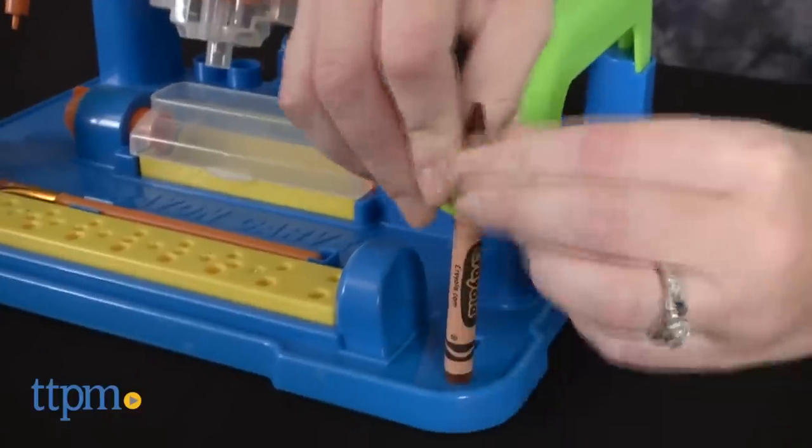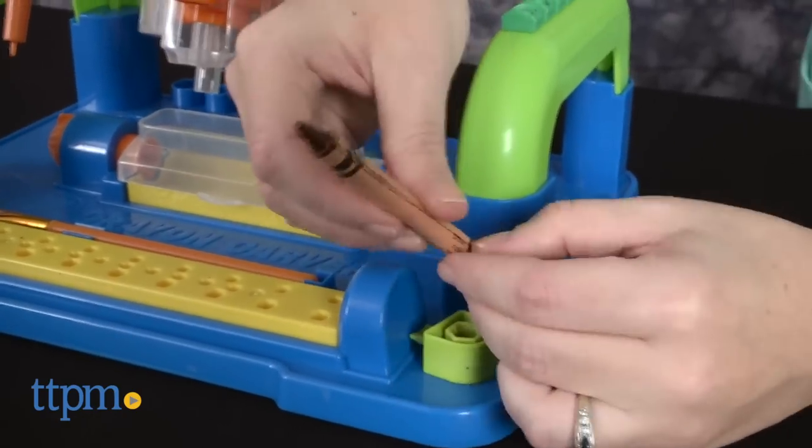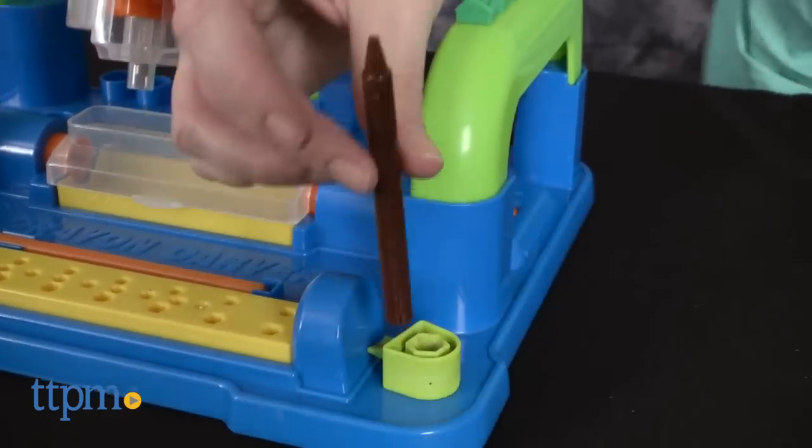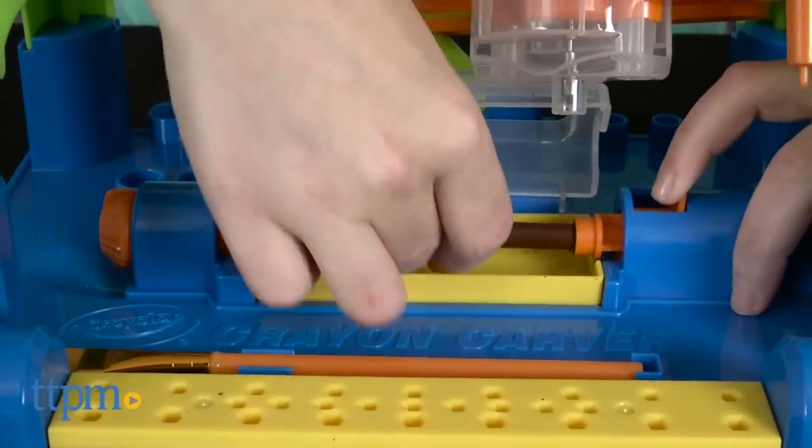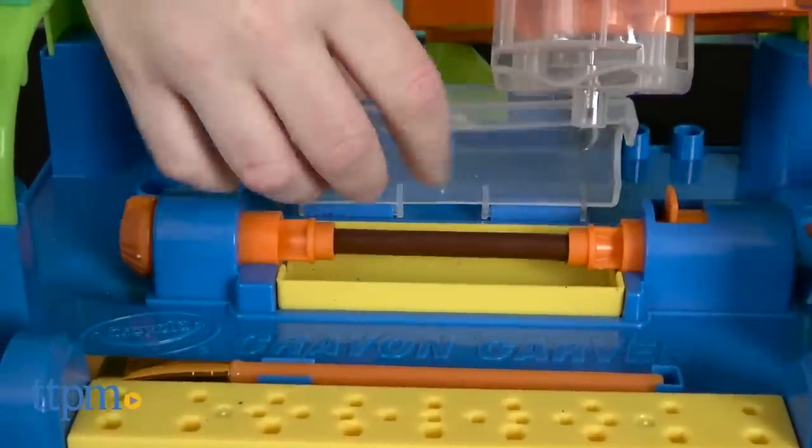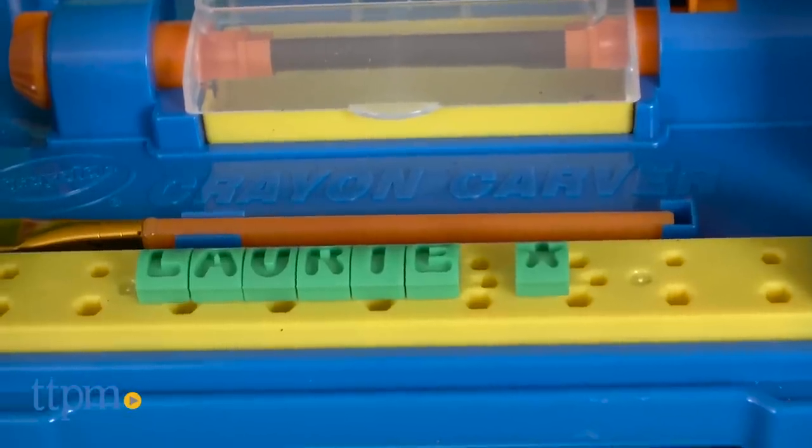Use the wrapper rubber to peel off a crayon's label and insert the crayon into the Crayon Carver unit using the adapters. Then insert up to 9 of the 40 included letter and icon tiles on the unit's front bar to spell out your message.